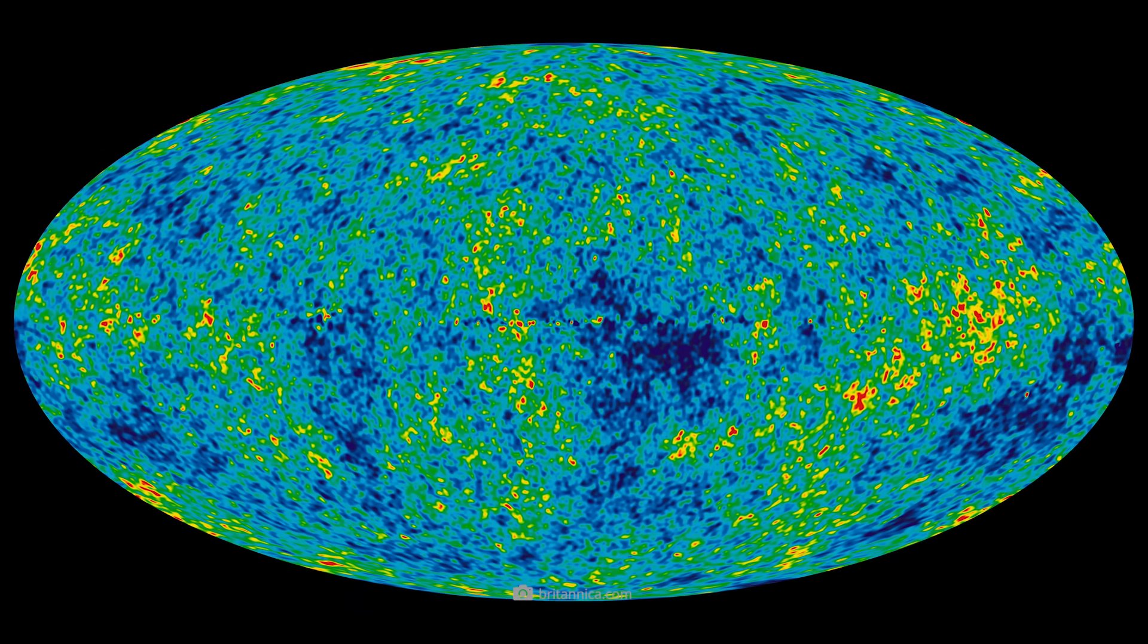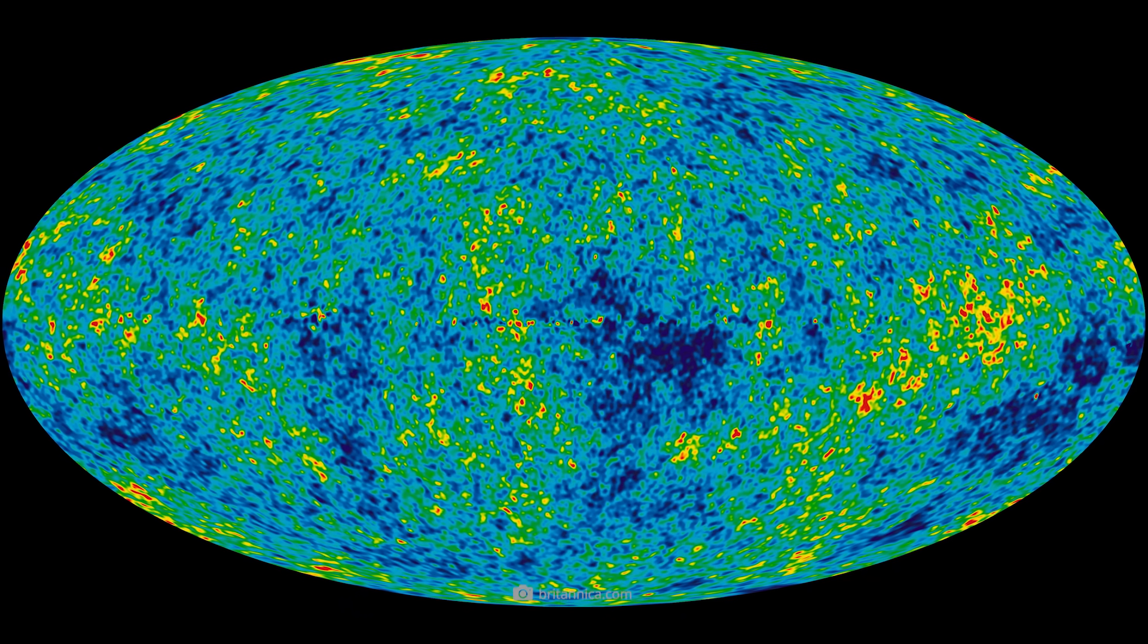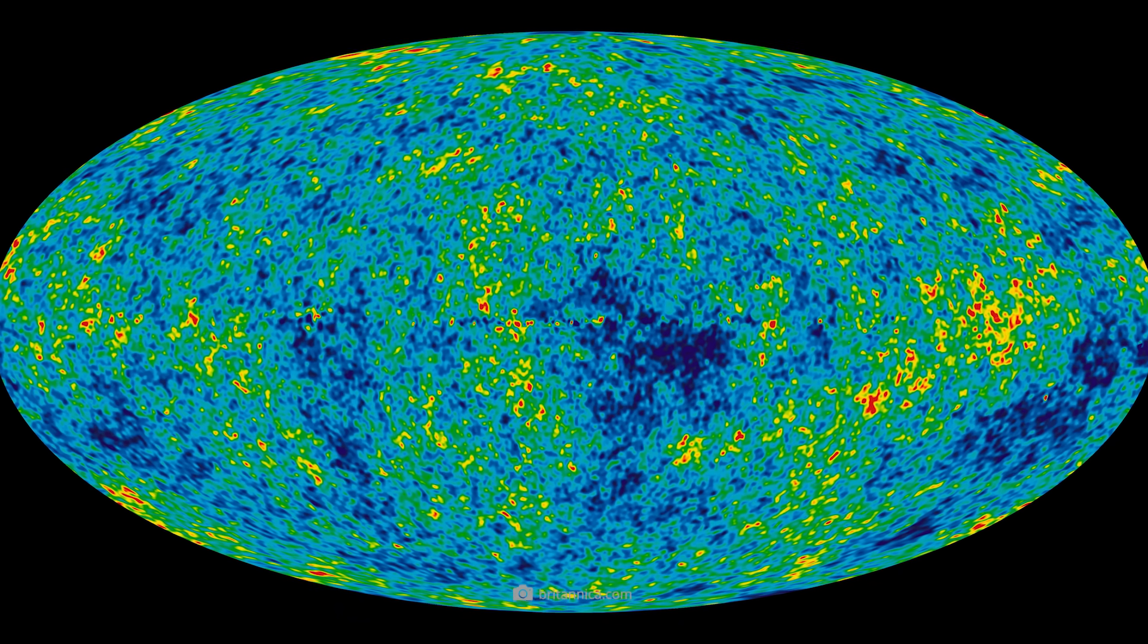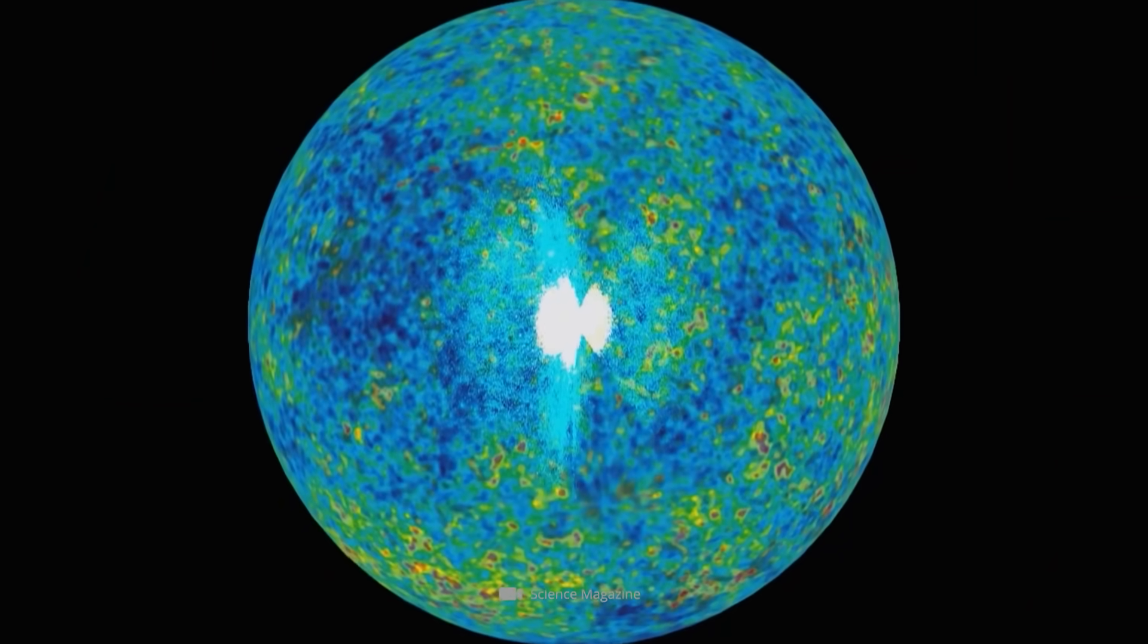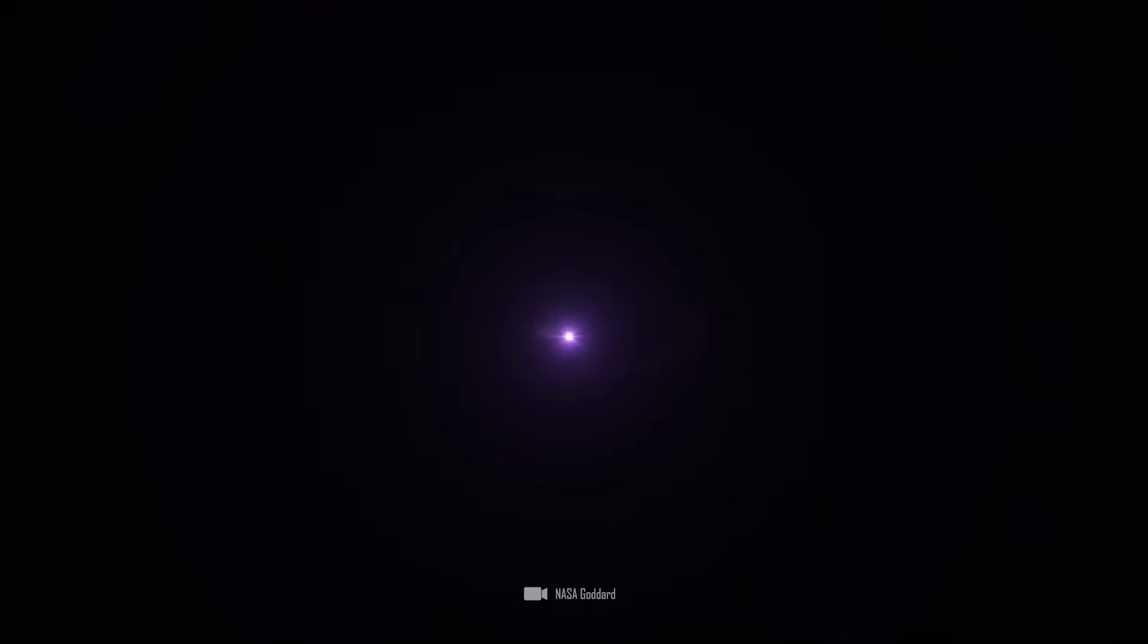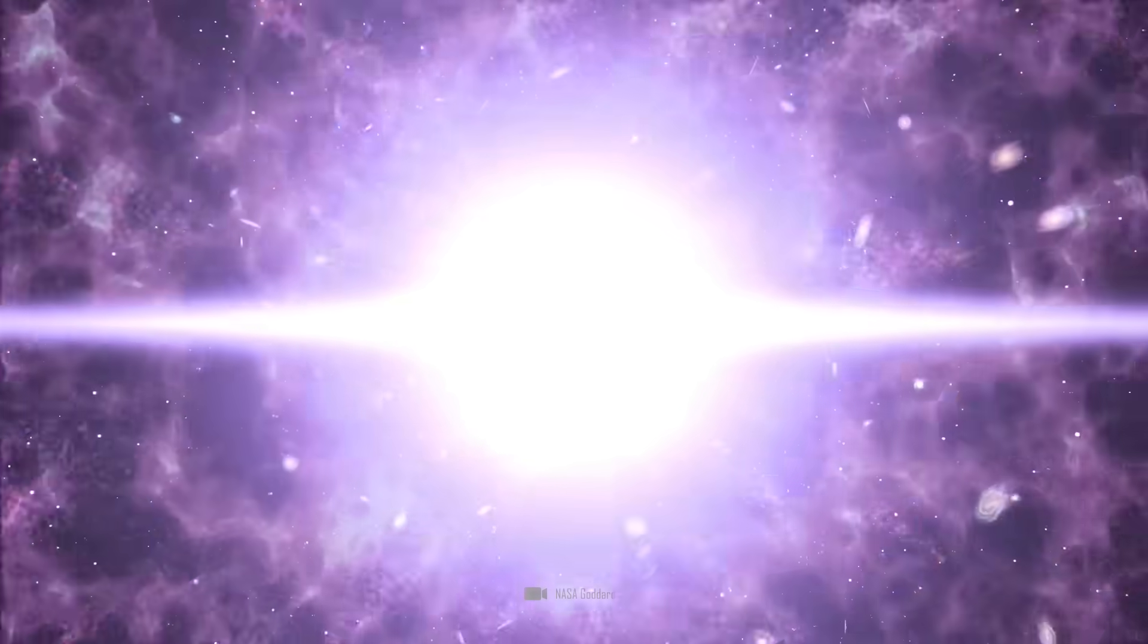We discovered the cosmic background radiation back in the 1960s and have since mapped it very well. This radiation is considered to be an aftereffect of the Big Bang, and much evidence for the Big Bang has been derived from it.